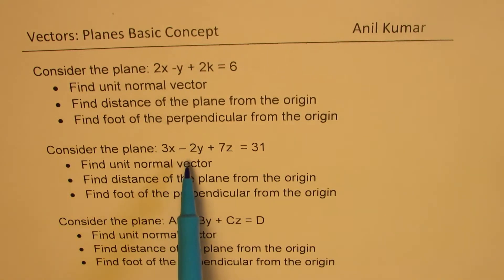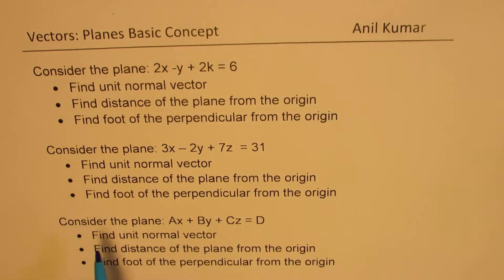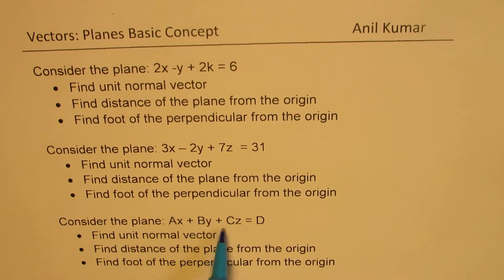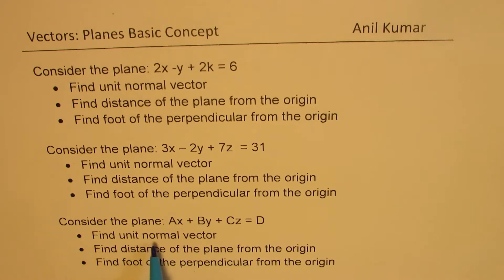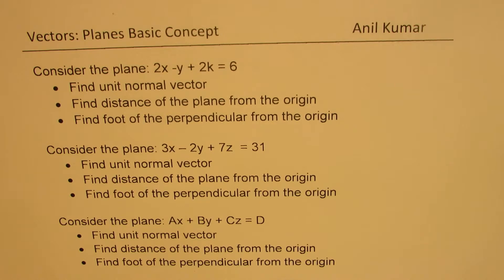Based on this, we have two practice questions and one general question. The general question is: consider the plane AX plus BY plus CZ equals D. Find the unit normal vector, find the distance of the plane from the origin, and find the foot of the perpendicular from the origin.